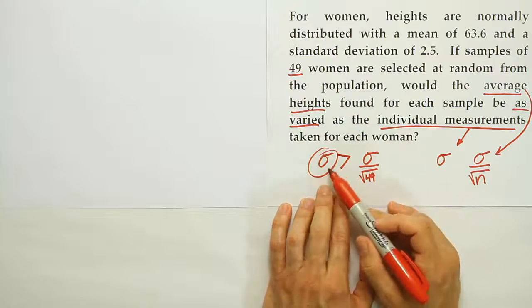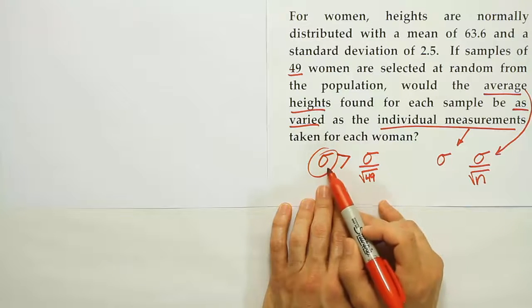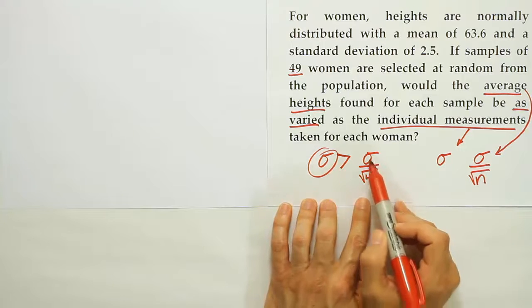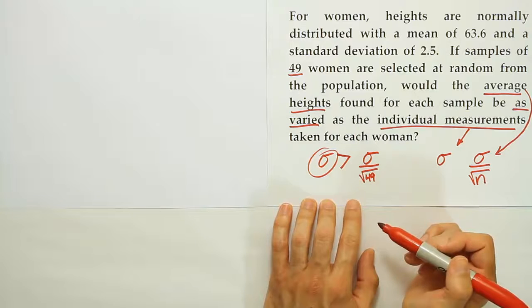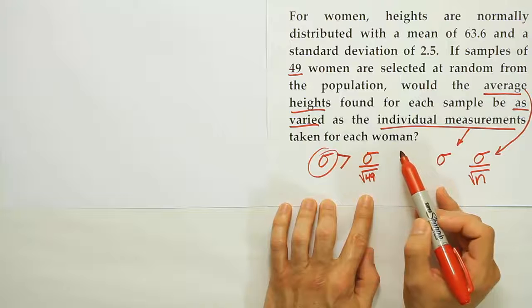So we know that this measurement for individuals, that variation or standard deviation in this case, the standard deviation here is going to be greater than it is for the groups of women. And so what that basically tells us is that, would it be as varied as individual measurements? No.